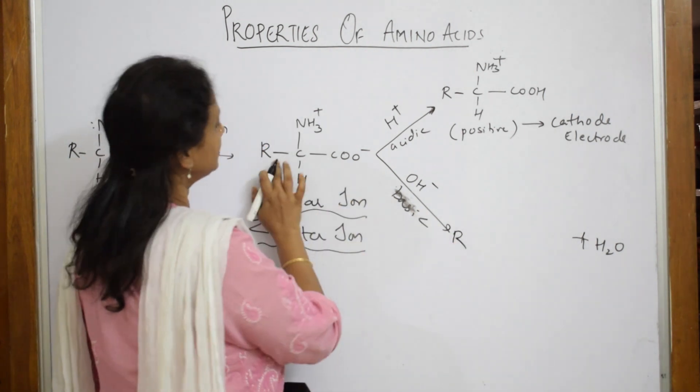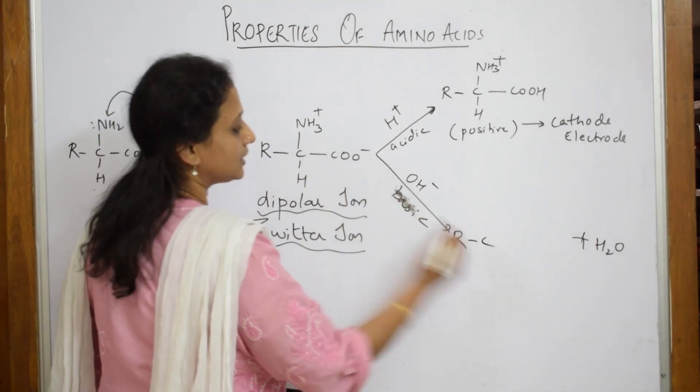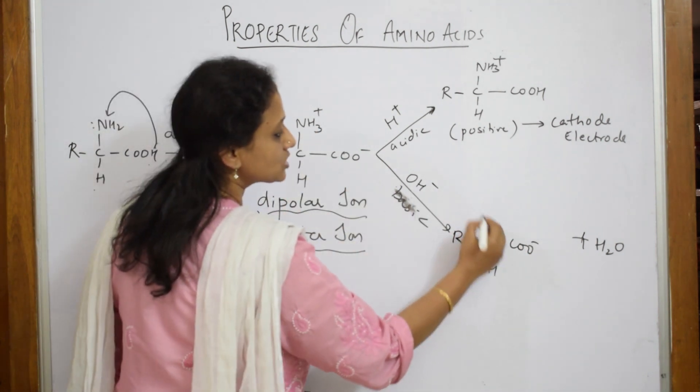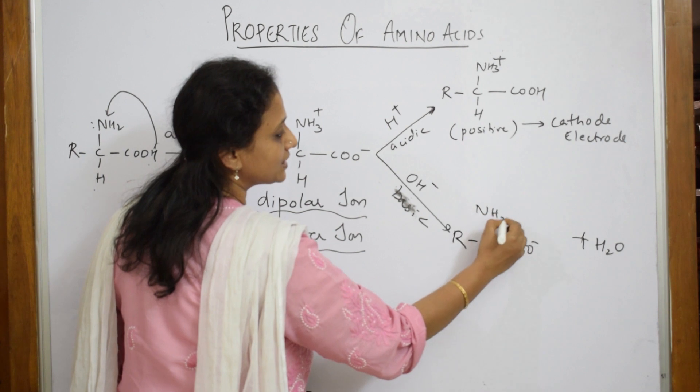This H plus and this OH comes out as water. What is left now? I have R here, carbon here, hydrogen here, COO minus like that and this has lost one proton and this becomes NH2.